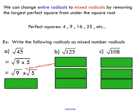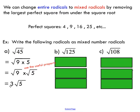So then I can use my useful property here. I can take my 9 times 5 product underneath the square root sign and break it up into the square root of 9 times the square root of 5. And from here, you can see why I wanted to pick a perfect square number. I can take 9, take the square root of it, and I get 3. So I can write this as 3 times root 5. Now sure enough, if you check on your calculator, the square root of 45 and 3 times the square root of 5 — those two values should be the same. We haven't changed anything; we've just rewritten our entire radical as a mixed radical.